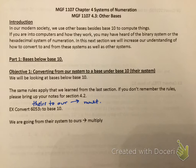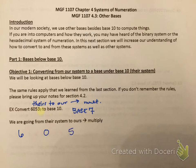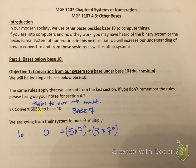This first example says convert 6053 base 7 to base 10. The subscript — that little tiny 7 — is called a subscript and means that's the base we're starting in. So we're starting in base 7. I write this out as 6, 0, 5, 3 and notice I have four digits. So I know I have 7 to the 0 (that's the 1's place), plus 7 to the 1st power, plus 7 to the 2nd power, plus 7 to the 3rd power — because I'm in base 7.